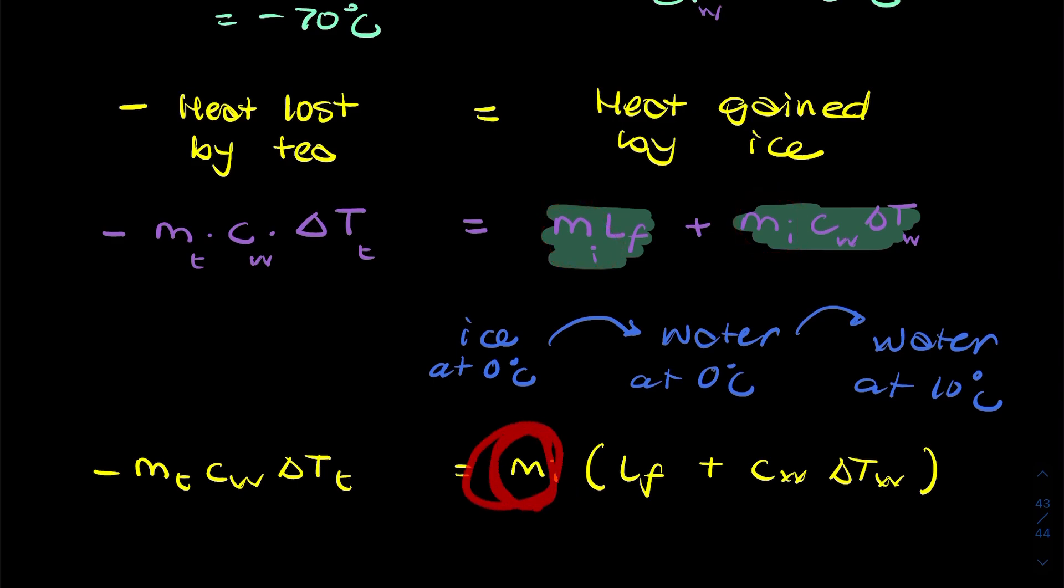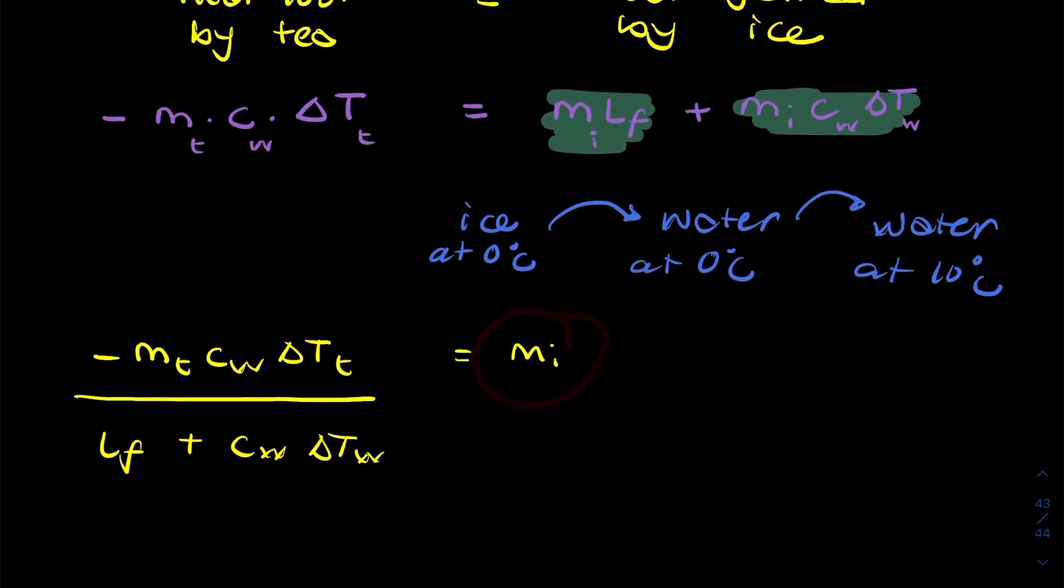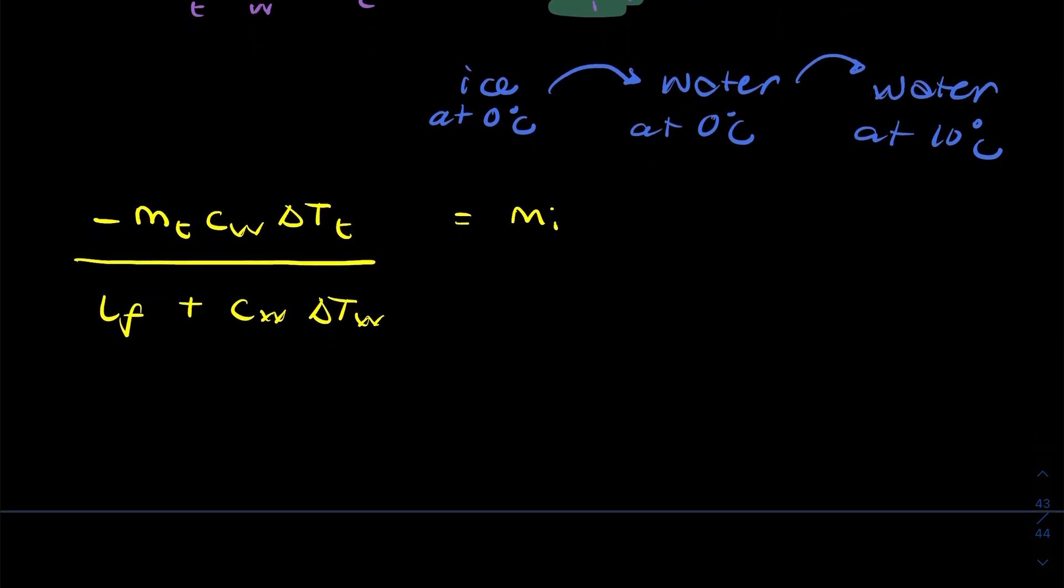And because this is what I want to find, I can divide both sides by that. So that will give me that there. So that's my expression for the mass of the ice. So now I can simply just plug that in and calculate the answer.